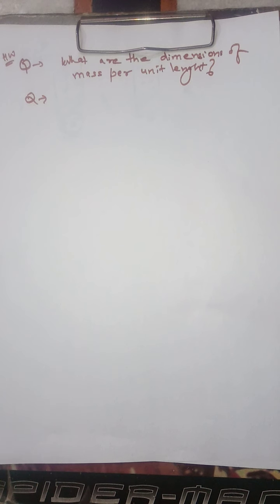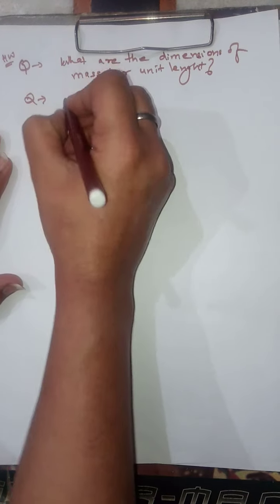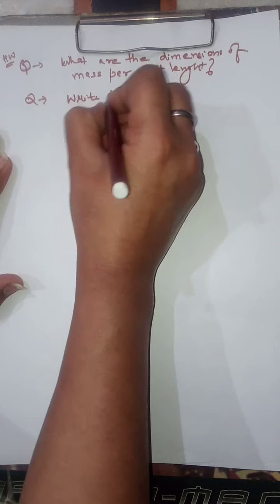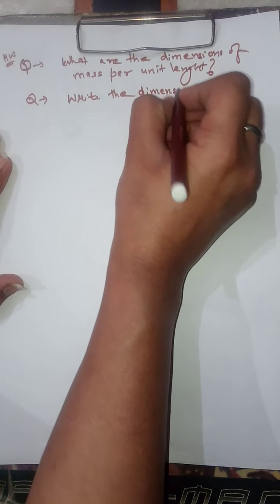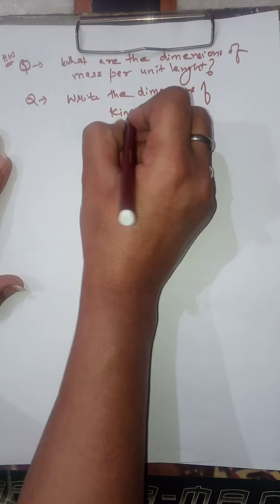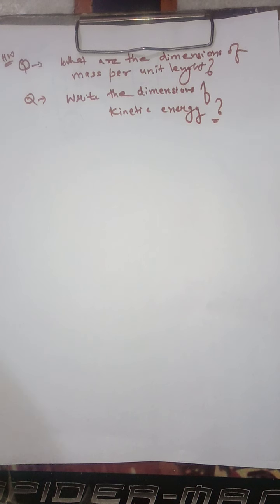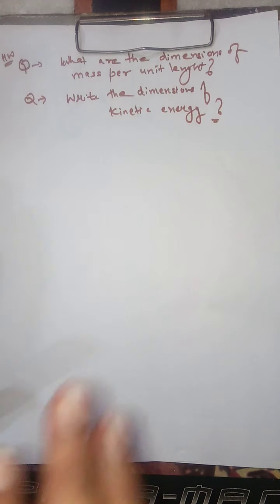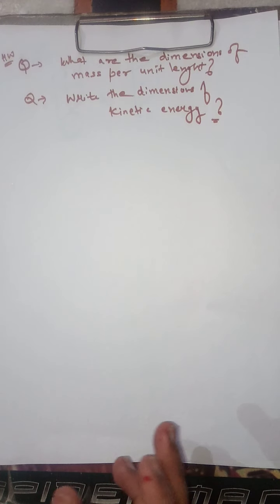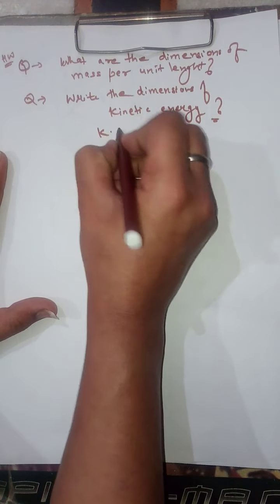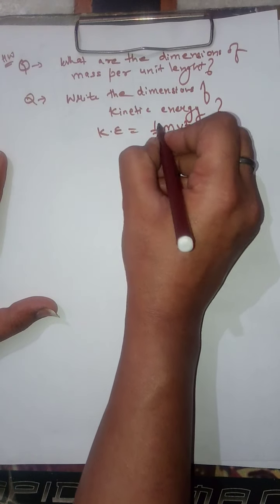The next question is: write the dimensions of kinetic energy. I am just giving a hint — kinetic energy equals one-half m v². One-half is a constant.